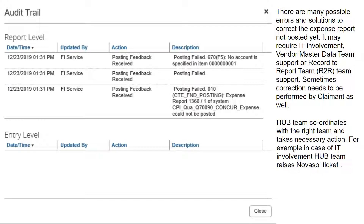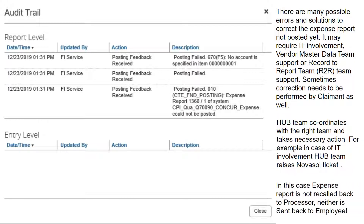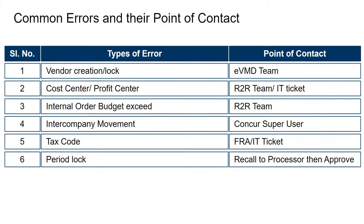For example, in case of IT involvement, the hub team raises a NovaSol ticket. In this case, the expense report is not recalled back to the processor, neither is it sent back to the employee. The table given here indicates the common errors in the Concur posting run and the point of contact for each error. Kindly go through them.